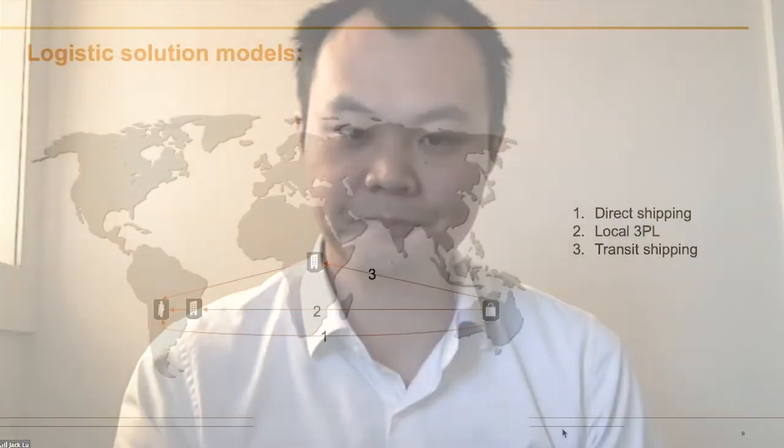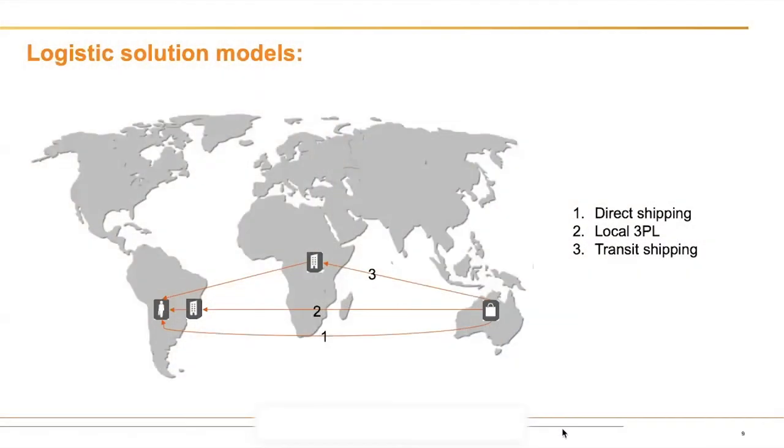You should also consider the use of color — for example, black and white can seem delicate and elegant in many western countries, but they are not positive colors to use in China or Japan. You also need to consider the format of your content — whether that's a video, GIF, or photo — depending on what the local consumer prefers.